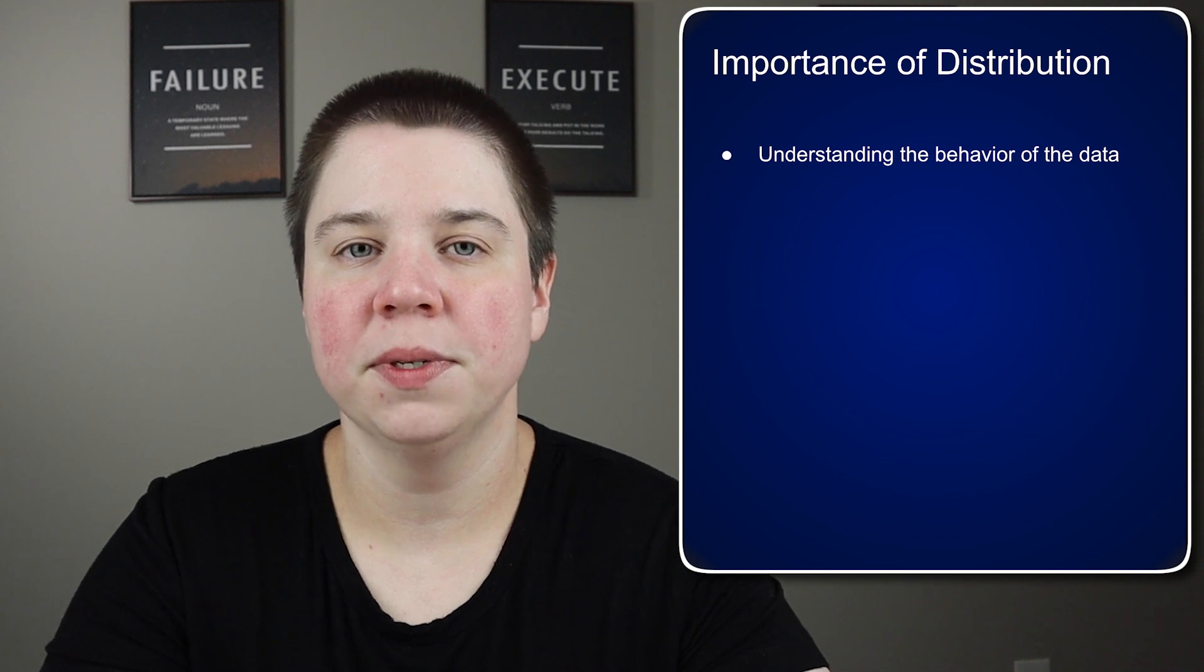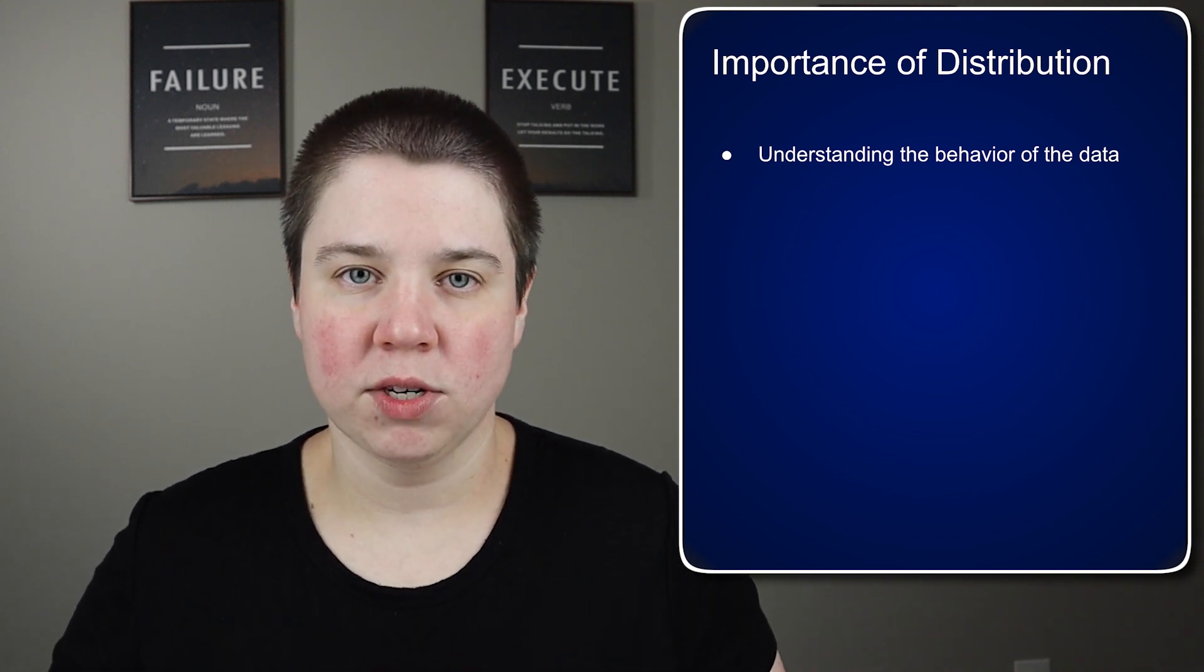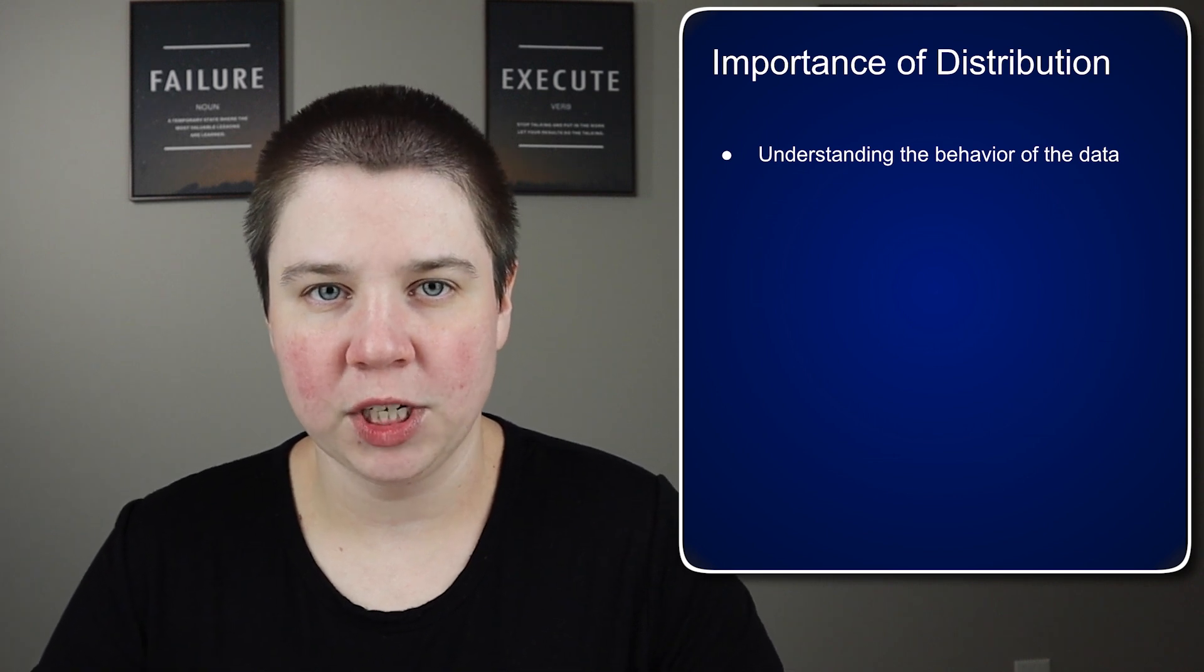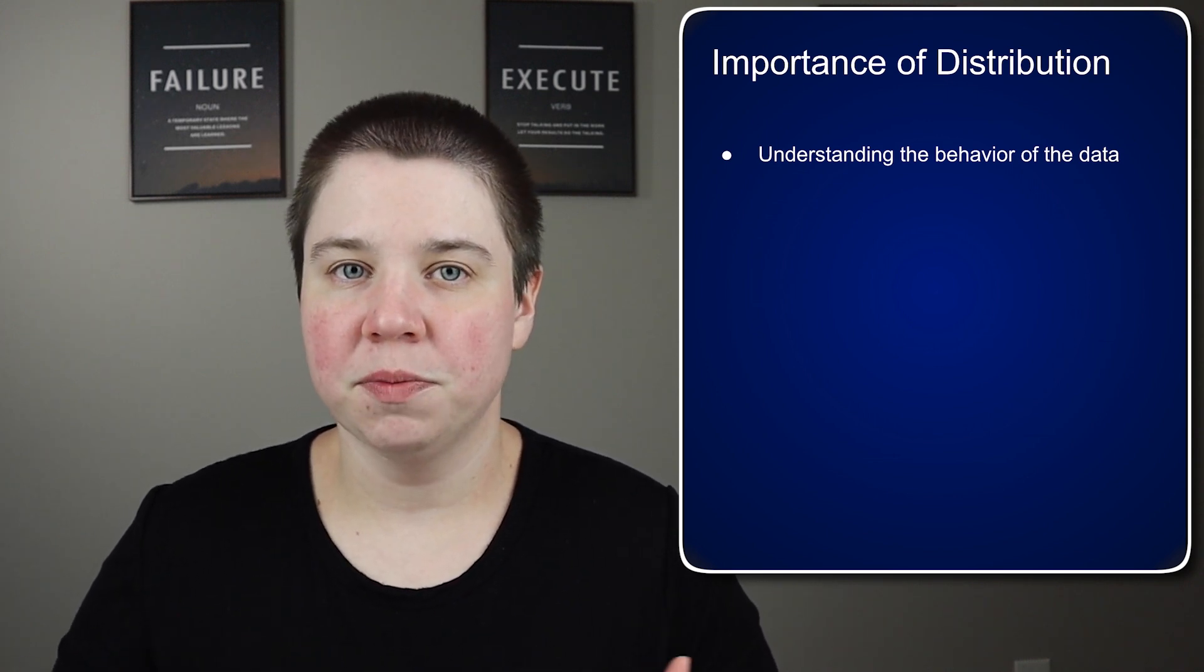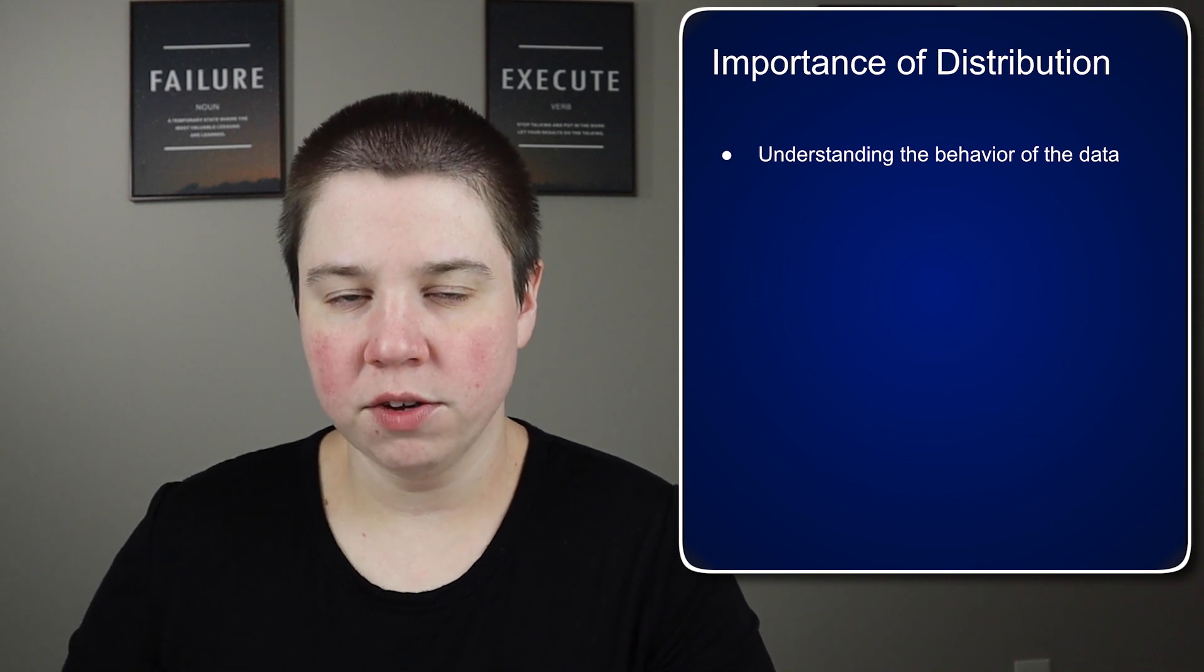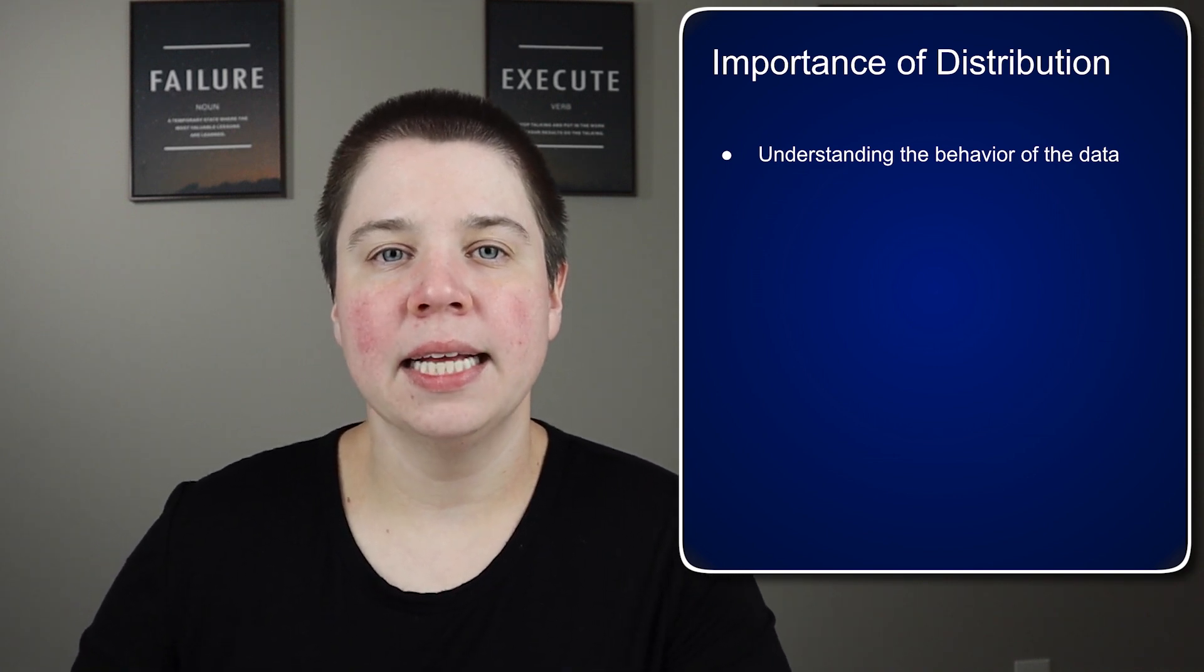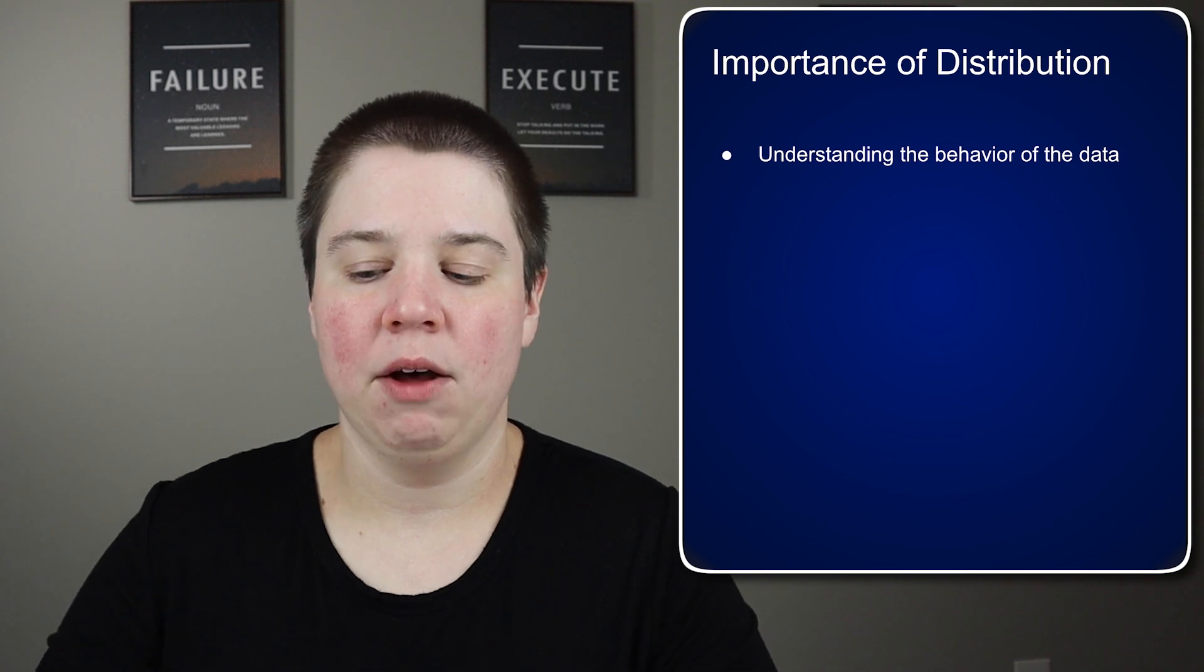If you have a bimodal distribution, that's important to understand because there might be two different characteristics affecting that distribution. If you have a skewed distribution, it might be worth investigating what could be causing the skewed distribution. Is that normal for your data, or is there something affecting your data like outliers?